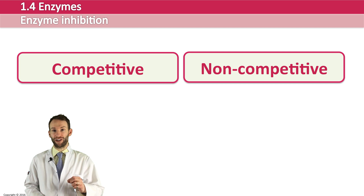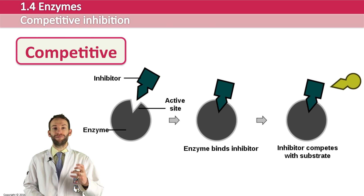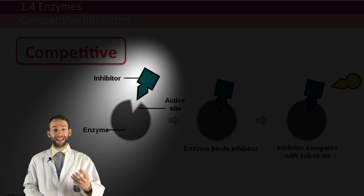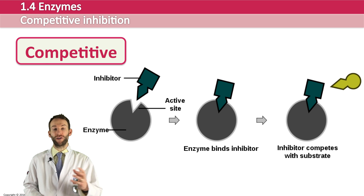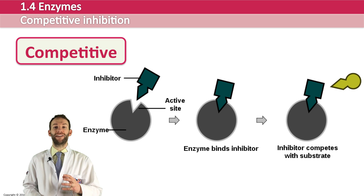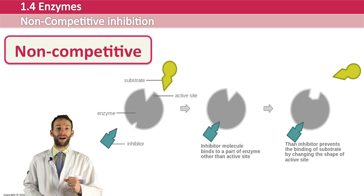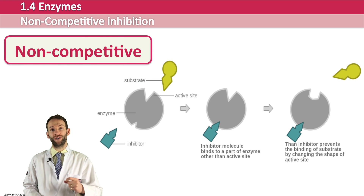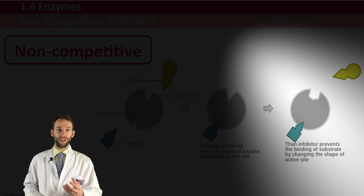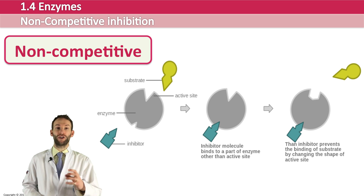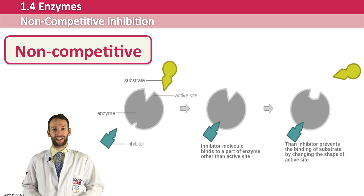In competitive inhibition, there is a molecule that can block the active site, so it's in direct competition with a substrate because they can both get into the active site. In non-competitive inhibition, we're looking at a molecule that binds to a different location on the enzyme and changes the shape of the active site so that the substrate no longer binds anymore — it's non-competitive because it's not competing for the same binding site.